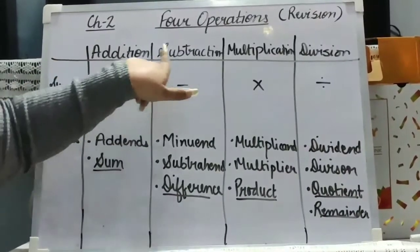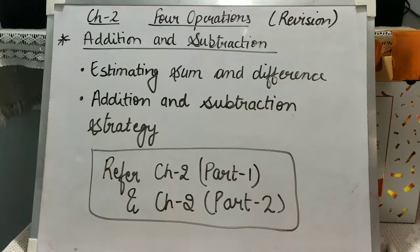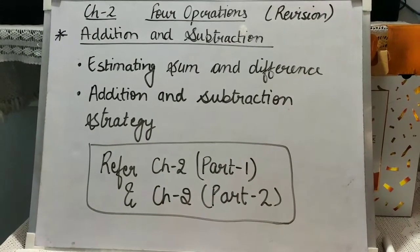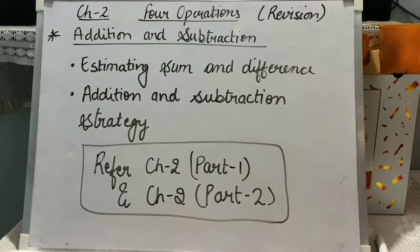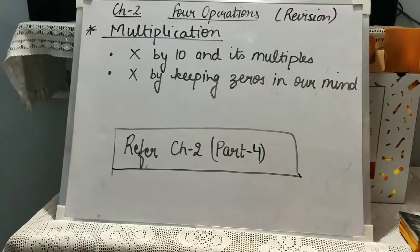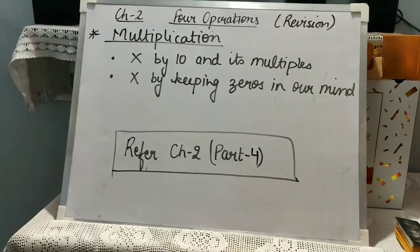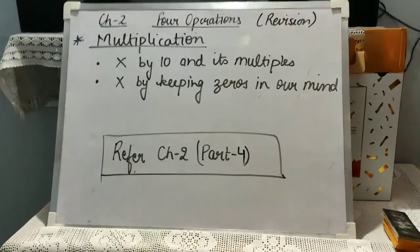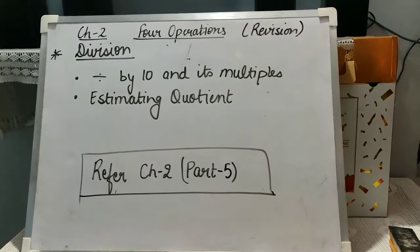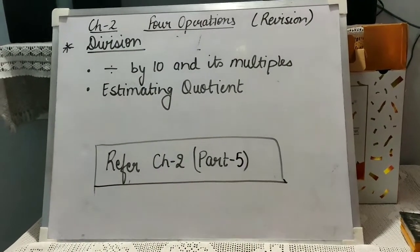Now we are going to do the subtopics that we have studied in these 4 basic operations. In addition and subtraction we have done: estimating sum and difference, and addition and subtraction strategies. For revising this concept you can refer the videos chapter 2 part 1 and chapter 2 part 2. In multiplication we have done multiplication by 10 and its multiples, and multiplication by keeping zeros in mind — refer chapter 2 part 2. For division by 10 and its multiples, and estimating quotient, refer chapter 2 part 5.